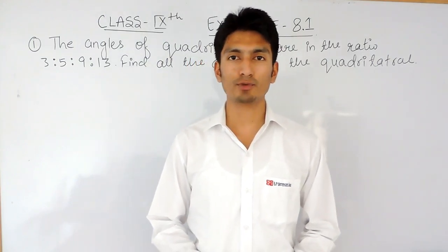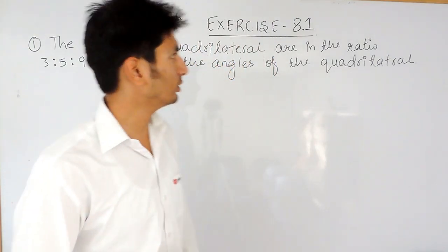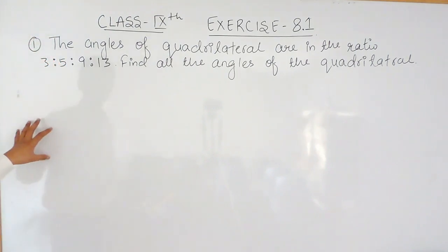Hello everyone, we are from TrueMath and in this video we are going to solve this first question of exercise 8.1. The question says the angles of quadrilateral are in the ratio 3:5:9:13 and you have to find all the angles of the quadrilateral.